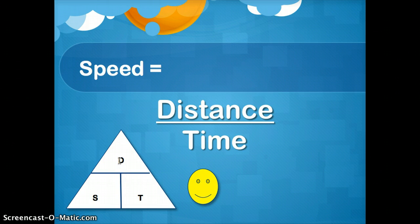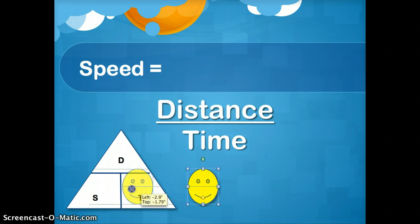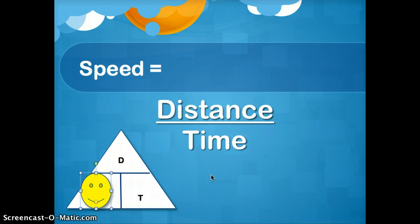So what I do is, with this triangle, if you're looking for speed, I cover up S for speed. You can just cover it up with your hand on your notebook if you'd like. And that tells you the formula: distance over time. Distance over time is for speed. We'll do some more examples, so hopefully this makes more sense.